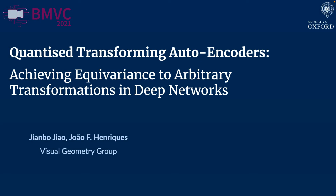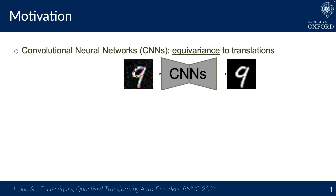Hi, my name is Xuân Bojiao and I'm here to present our work done jointly with Joe Henricks at the VGG in Oxford. Our work is motivated by a fundamental property of convolutional neural networks, which is translation equivalence.